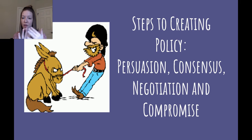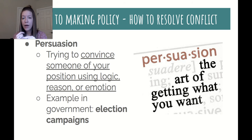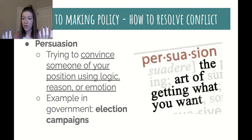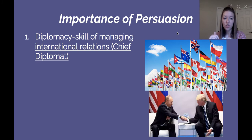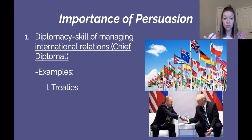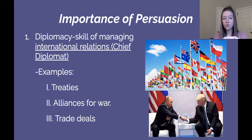There are four methods of resolving conflict: persuasion, consensus, negotiation, and compromise. Persuasion is where you're trying to convince someone of your position using logic, reason, or emotion — you're trying to get people on your side and prove your side is the right side. An example in government would be election campaigns, where candidates try to persuade you to vote for them. As chief diplomat, the president also uses persuasion when meeting with leaders of other countries for things like treaties, alliances, and trade deals.